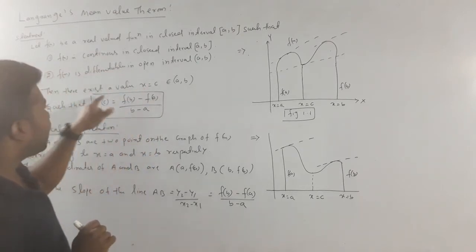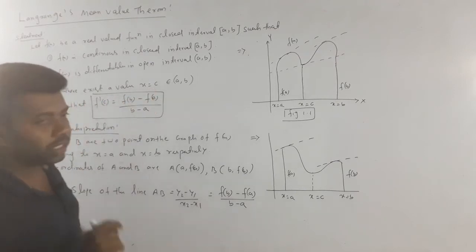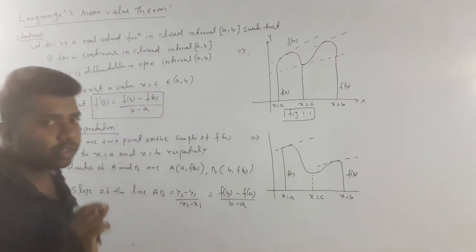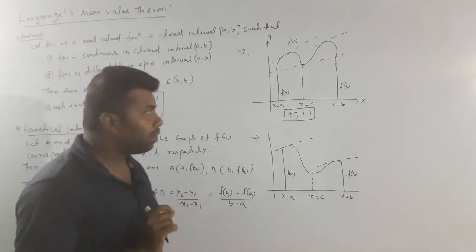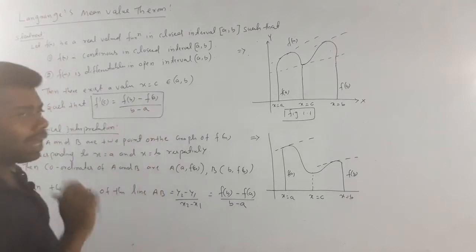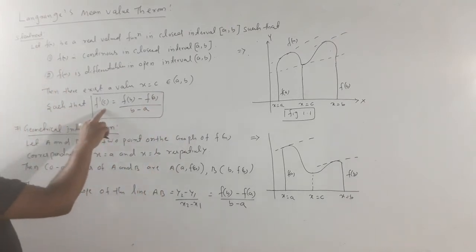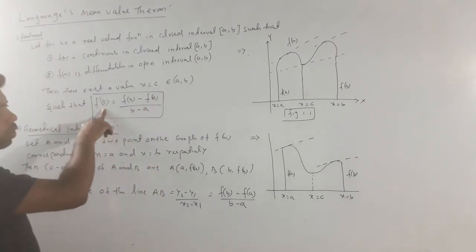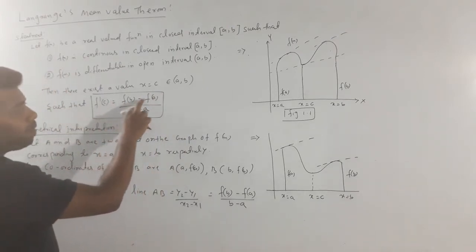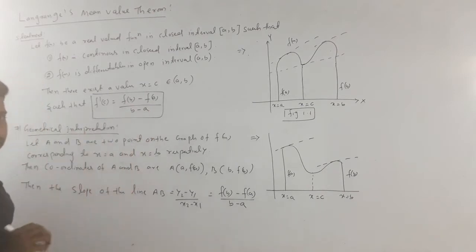then there exists a value x is equal to c, which lies between a and b, such that f prime of c is equal to f of b minus f of a, divided by b minus a.